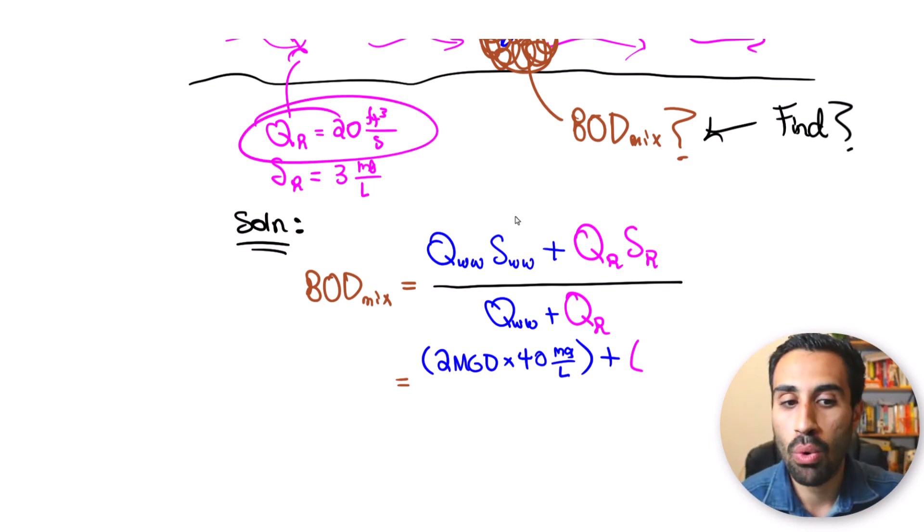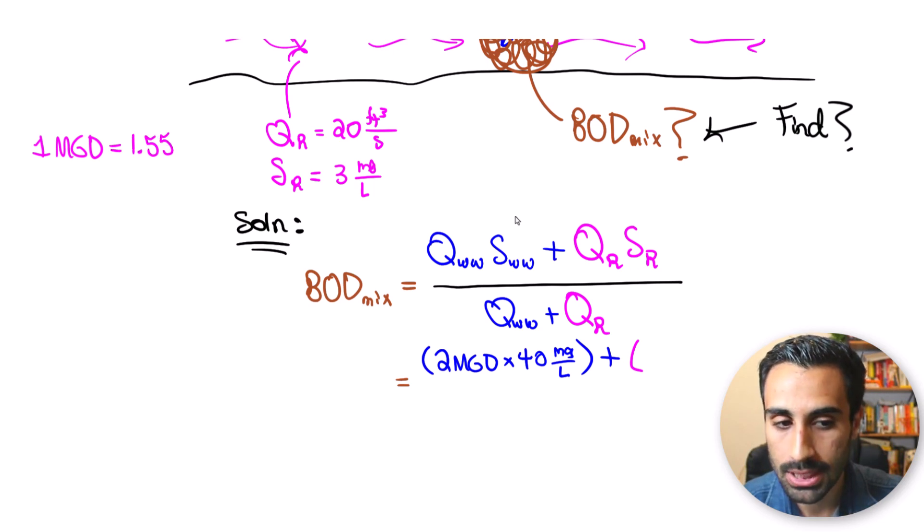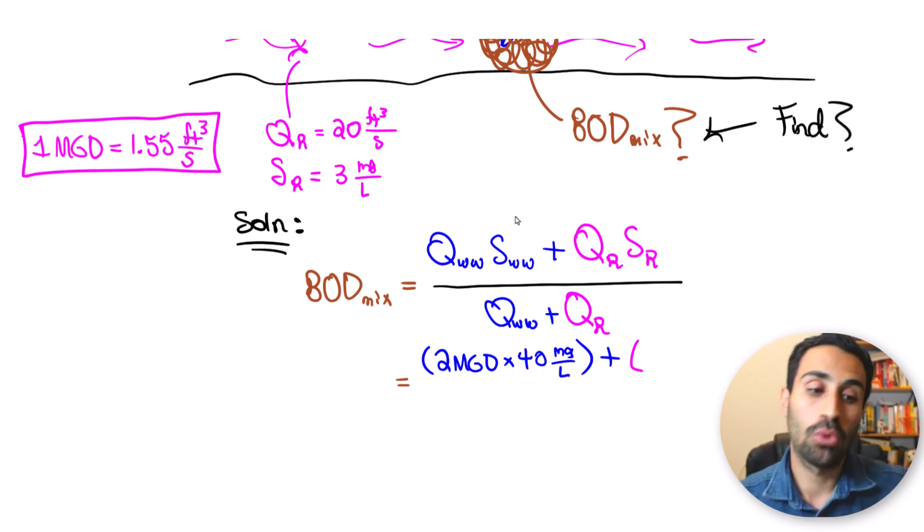For this one I'm going to keep them all in MGD, million gallon per day. So what we need to do is convert this Q river to million gallon per day. And the way we do that, the fast way I'm going to show you for this FE exam is using this conversion. We will say that one MGD is equal to one point five five CFS, cubic feet per second, all the time. All the time this will work. So rather than doing it the long way, which you can do if you prefer, I'm going to do the fast way and I want you to know this conversion because we see it often when we deal with US units, million gallon per day and CFS.